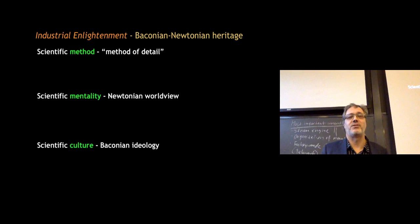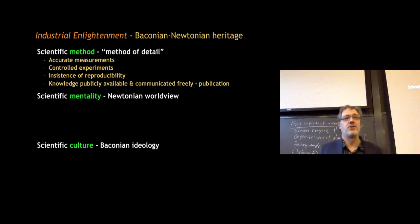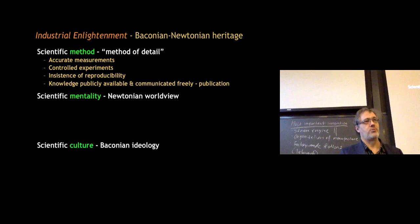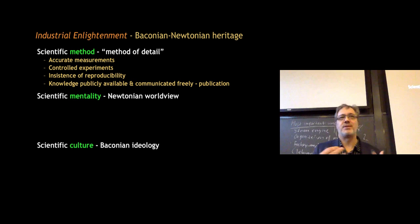There are three main aspects of this heritage. The first is the scientific method — focus on accurate measurements and controlled experiments, insistence on reproducibility, and making knowledge publicly available and communicated freely. With the Scientific Revolution, this comes in terms of publishing scientific articles in scientific journals. There's a saying that information wants to be free, and in some ways that's part of this scientific heritage — that scientific results and communication should be open.